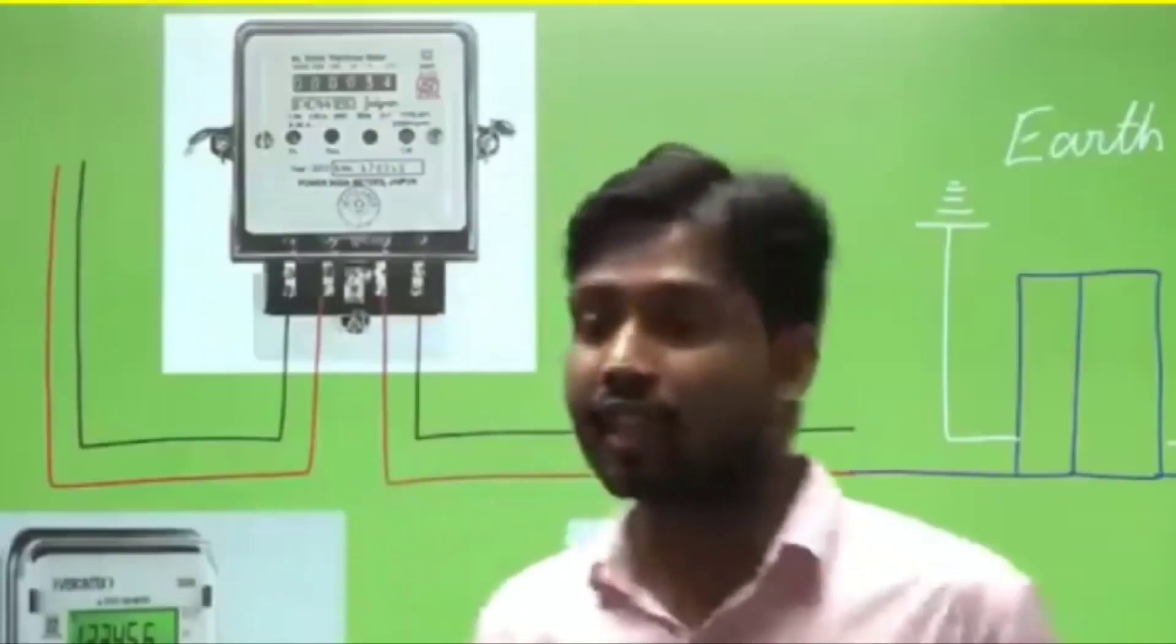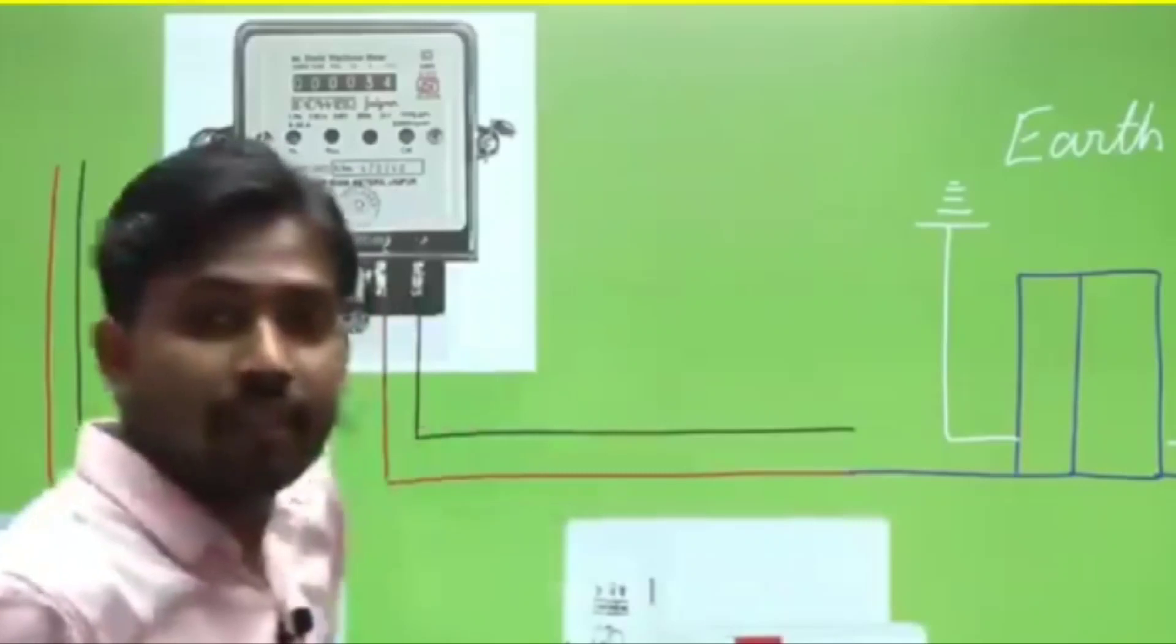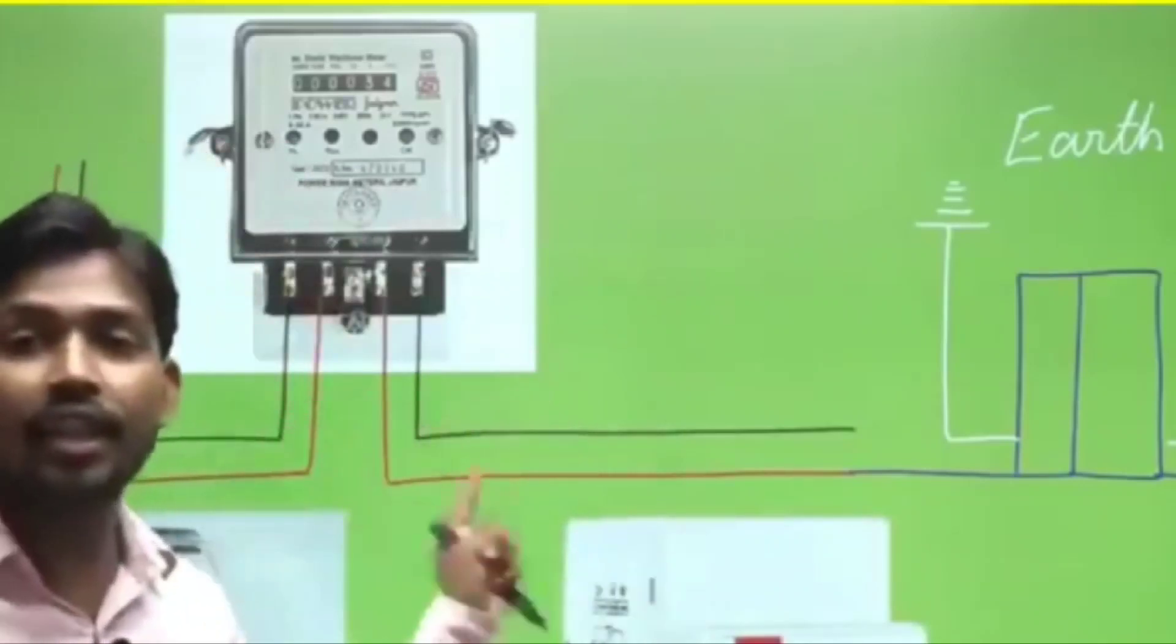Now, how do people do this? Look, this is your single-phase meter. It takes one phase and one neutral - this is the input. The output will go to your house, one phase and one neutral.